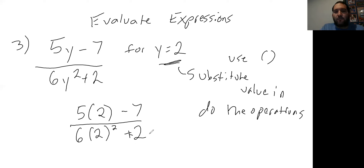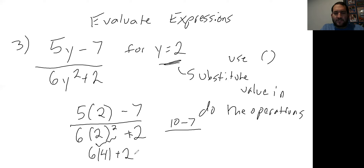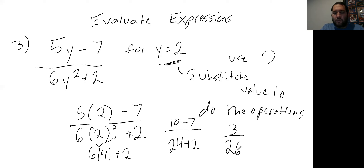Simplify the top and the denominator separately. The top: 5 times 2 is 10, minus 7. The bottom: order of operations says do the exponent first — 2 squared is 4, times 6 is 24, plus 2 is 26. So the top is 10 minus 7 which is 3, over 26. Does 3 over 26 simplify? No. So the answer is 3 over 26. Fractions as answers are perfectly fine — don't worry if you get a fraction.